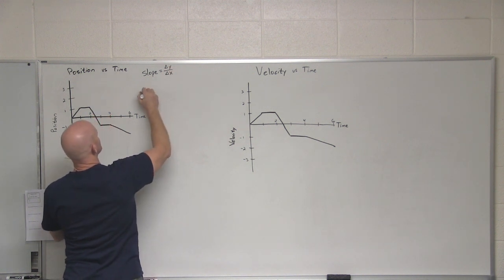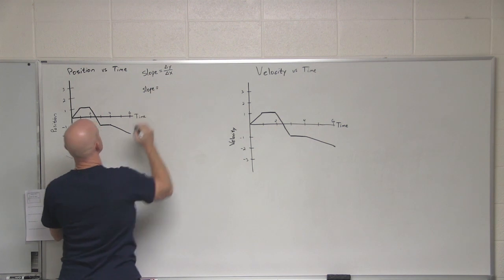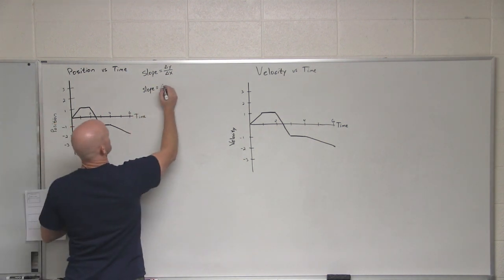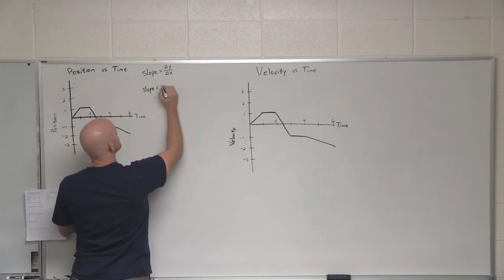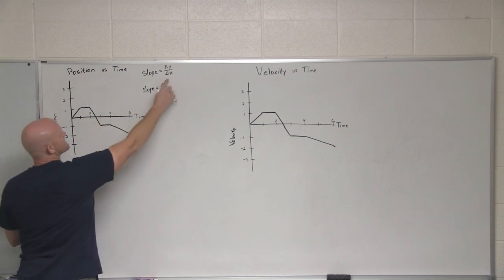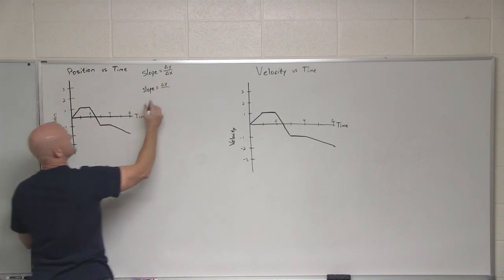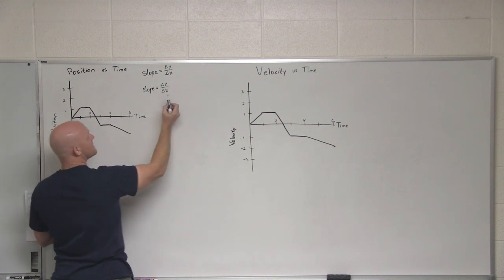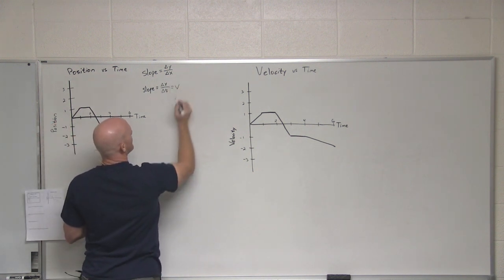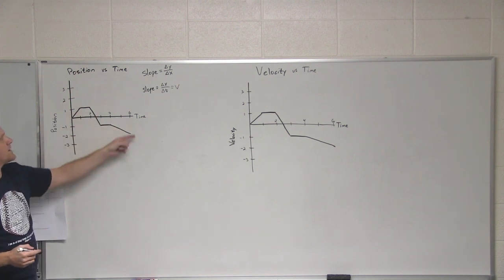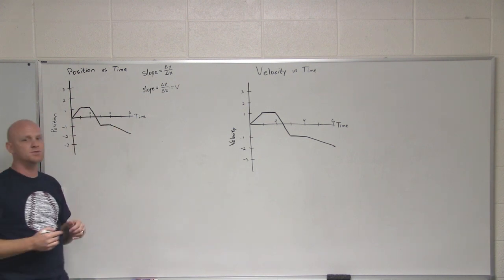In our case, in this position versus time graph, the change in y is the change in position. What is change in position called? Displacement, which we call delta x. And the change in x in this case, change in the x-axis, is the change in time. And what is displacement over time? That's the same thing as velocity. And so when you've got a position versus time graph, the slope everywhere on this graph gives you the velocity.